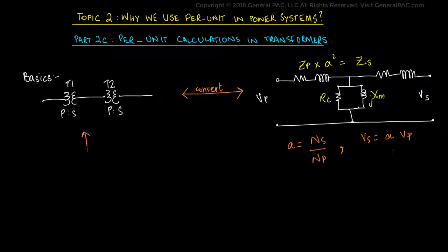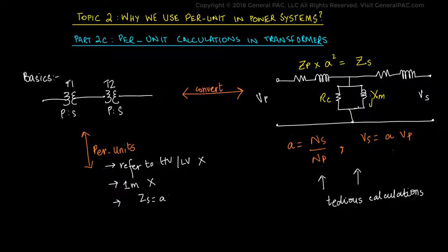However, when a transformer is transformed into per units equivalent, the need for tedious calculations performed to refer the transformer to either the high voltage side or the low voltage side is eliminated. The magnetizing currents are neglected and even there is no requirement to calculate impedance on different sides individually. Let's see how this is made easy.